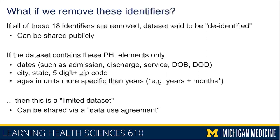One option is to remove the 18 identifiers — if all 18 identifiers are removed, the dataset can be shared publicly because it's de-identified. De-identified in health data has a very specific meaning: all 18 identifiers were removed. Even then, you may want an expert to verify there's no other way to recreate who individual patients might be. A dataset that still contains some limited elements — like certain dates, more specific location information, or ages in years plus months — is called a limited data set.